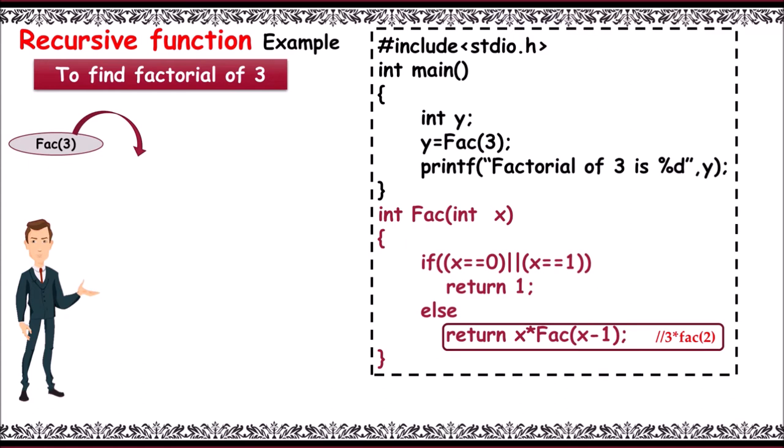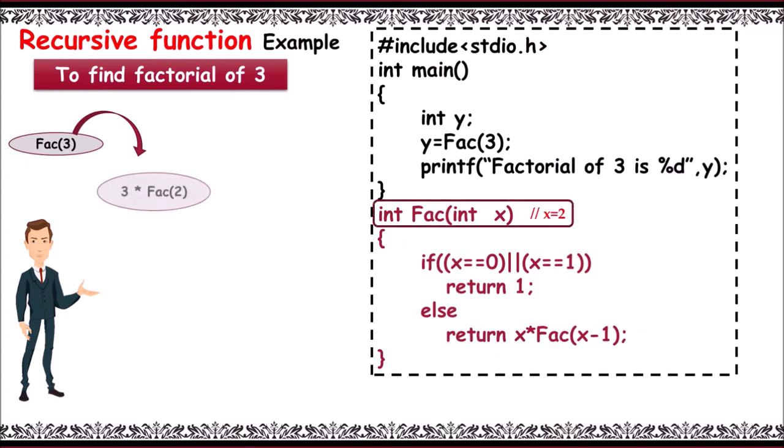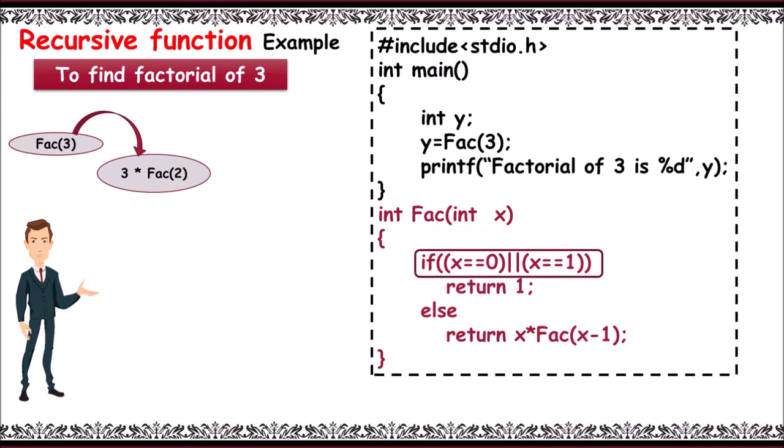We call fact of 2. Function is called with x is equal to 2. We call fact as a recursive function. Now fact of 2 works as 2 not equal to 0 or 2 not equal to 1, condition fails. Else block executes with 2 into fact of 1.